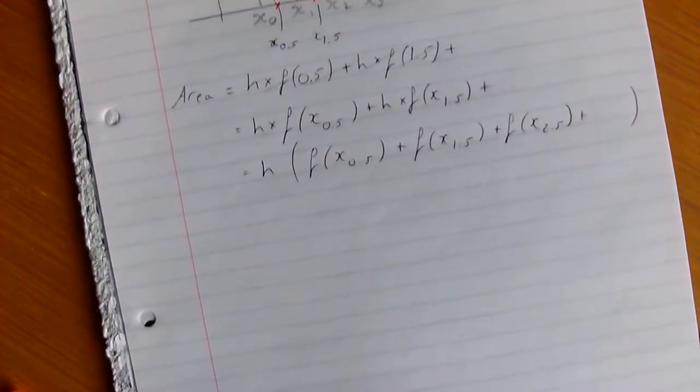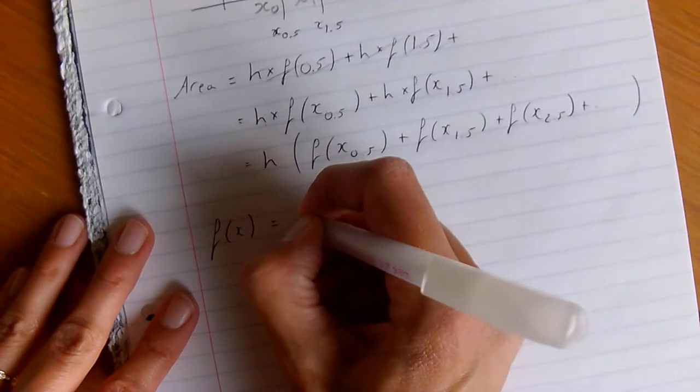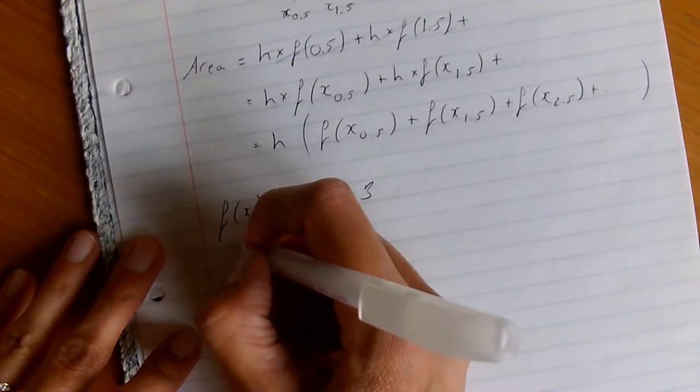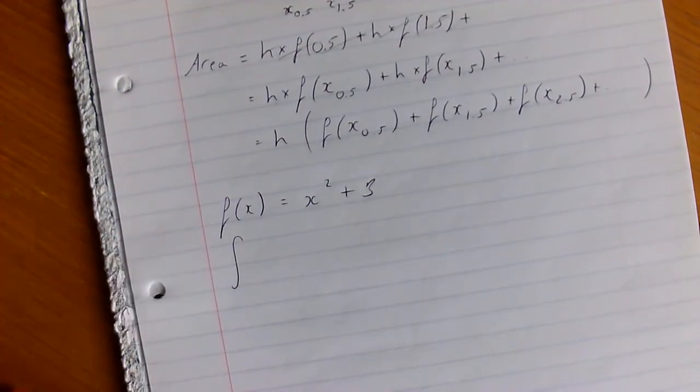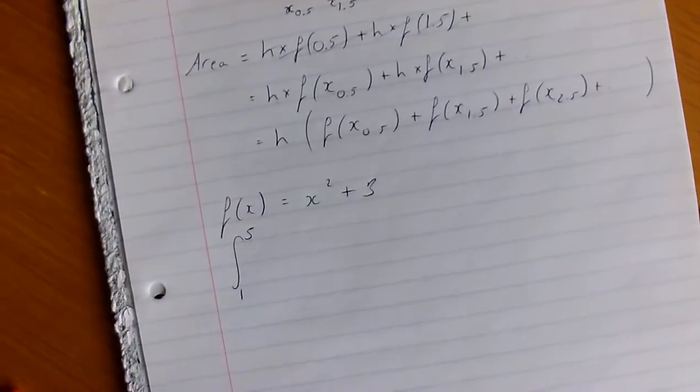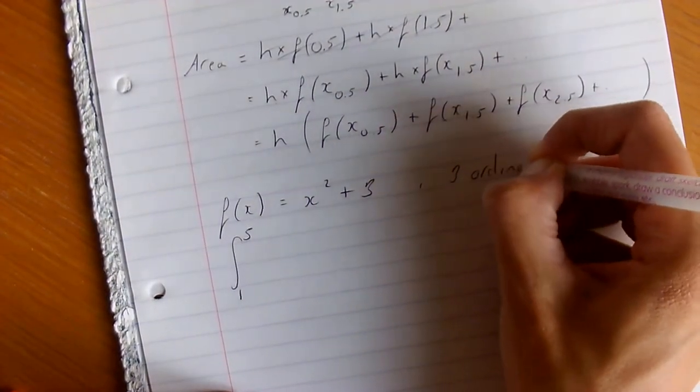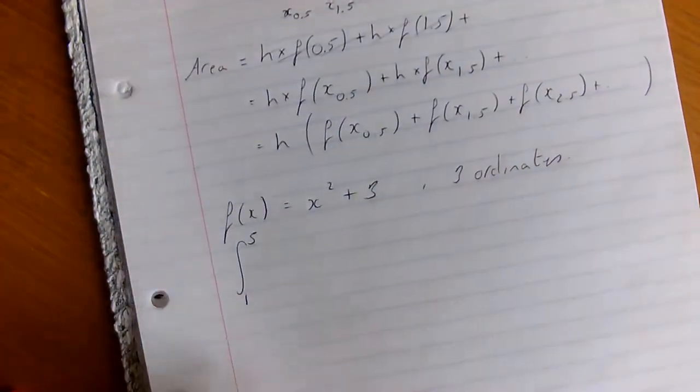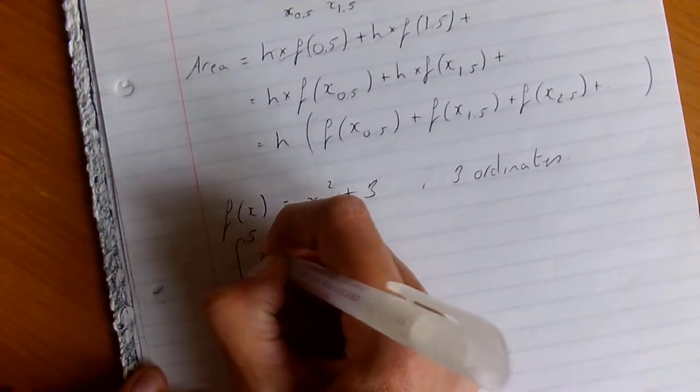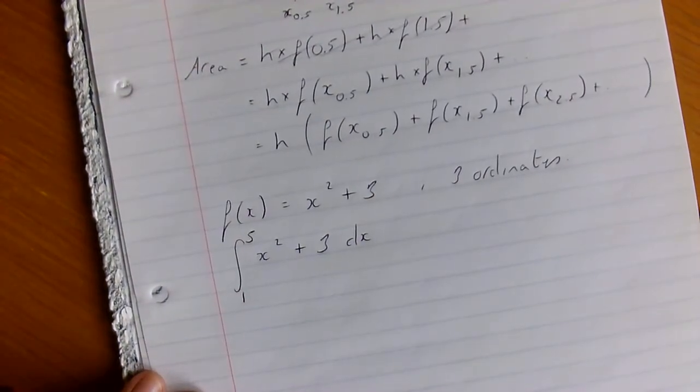So to see it in practice then. We're going to have that f of x is going to equal, I thought we'd go for something like x squared plus 3. And we're going to actually be calculating the area, what should we do? I think we'll do it between 1 and 5. And we're going to have 3 ordinates. Just 3 actual x values. So x0, x1 and x2. So it's going to be a fairly straightforward one to do.